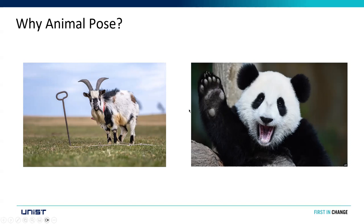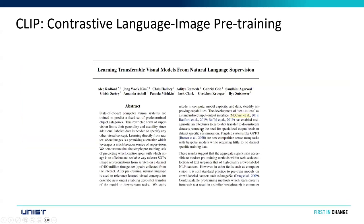Human pose estimation models cannot work well for animal pose estimation because there are so many animal types, and it's really hard to find a dataset containing each and every animal existing in the world. We need something with the capability of generalizing across scenes pretty well — and one thing that does this well is CLIP.